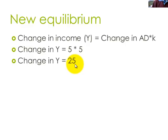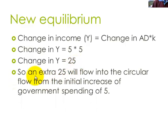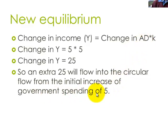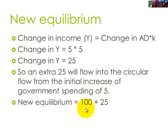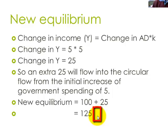Let's look at the new equilibrium, coming back to the earlier example. The initial change in aggregate demand was 5; the expenditure multiplier is 5. So the change in income in this economy is 25 — an extra $25 billion will flow into the circular flow from the initial increase of government spending of 5. Remember that government spending is part of aggregate demand, so don't get confused there. The new equilibrium — initially it was 100 — by that action of government spending of 5, multiplied by 5, an extra 25 gets added, giving us 125. I could have kept going until I got to 125, but this formula is much simpler.